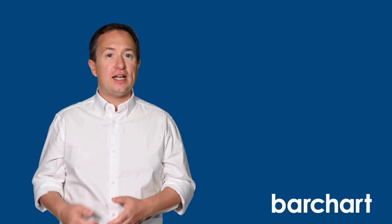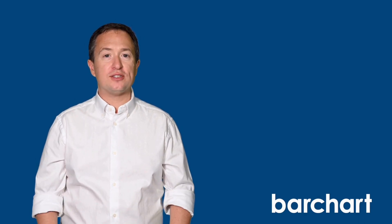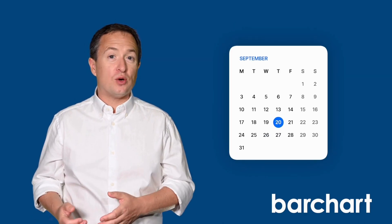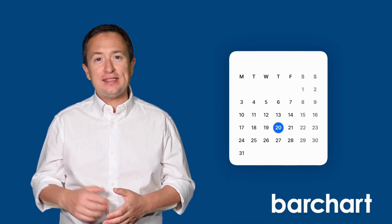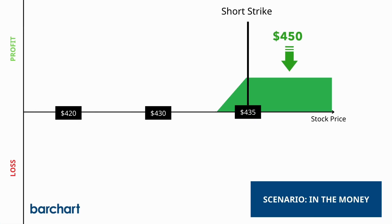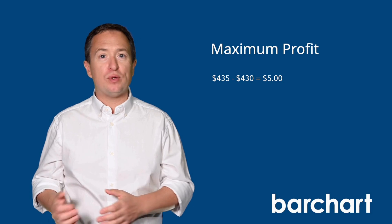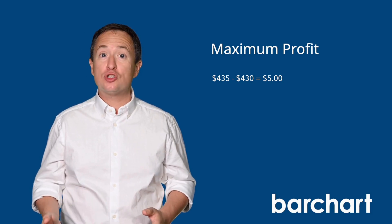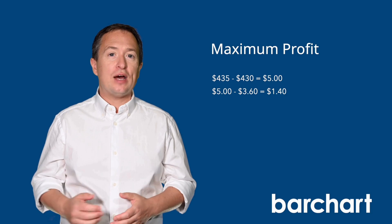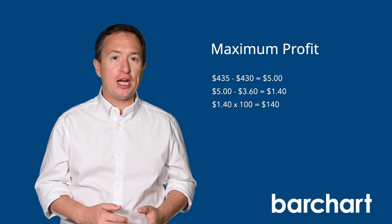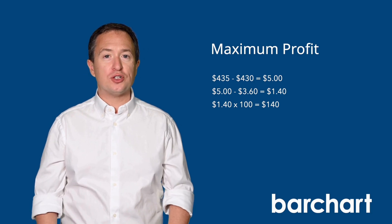Now that we have our trade details, let's discuss the potential results. Fast forward to September 20th, and let's say that Microsoft is trading at $450, above the $435 short strike. That means the trade is in the money and is at its maximum profit condition. To calculate the maximum profit, take the difference between the strike prices, then subtract the net debit. For this trade, that works out to $1.40 per share, or $140 per contract.